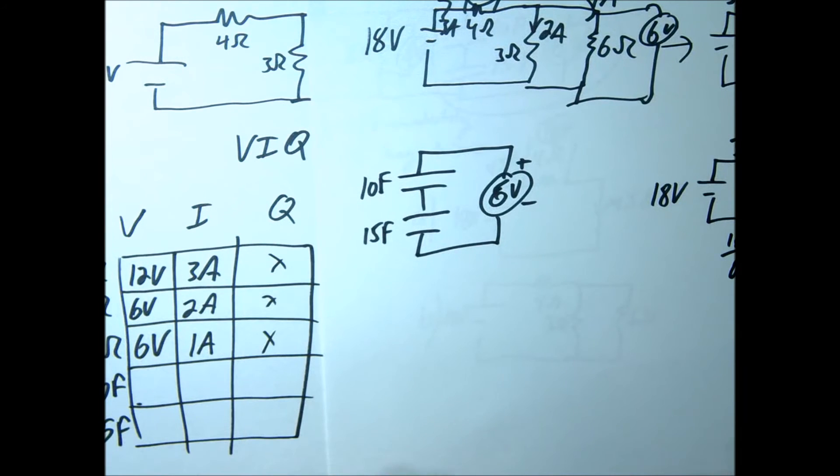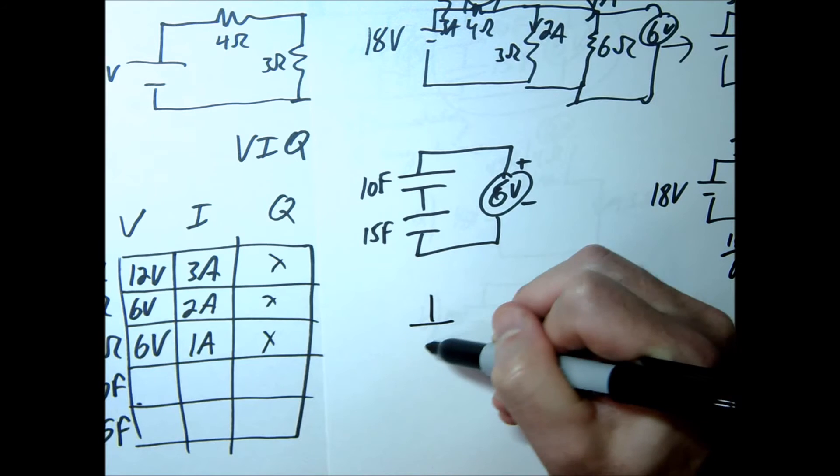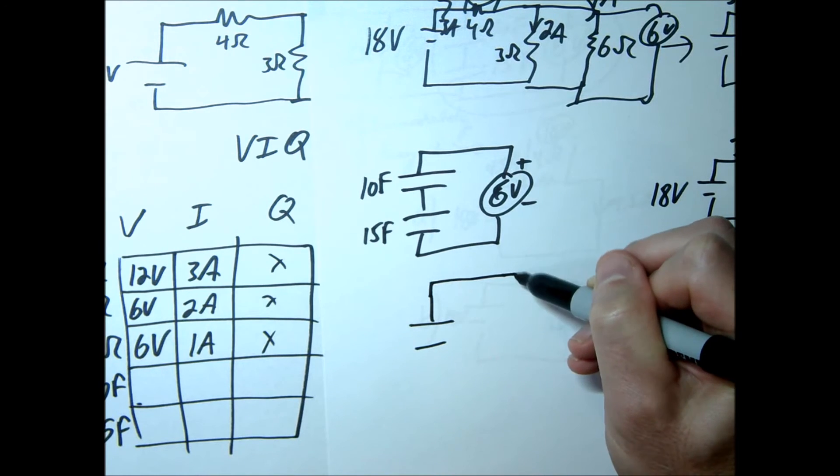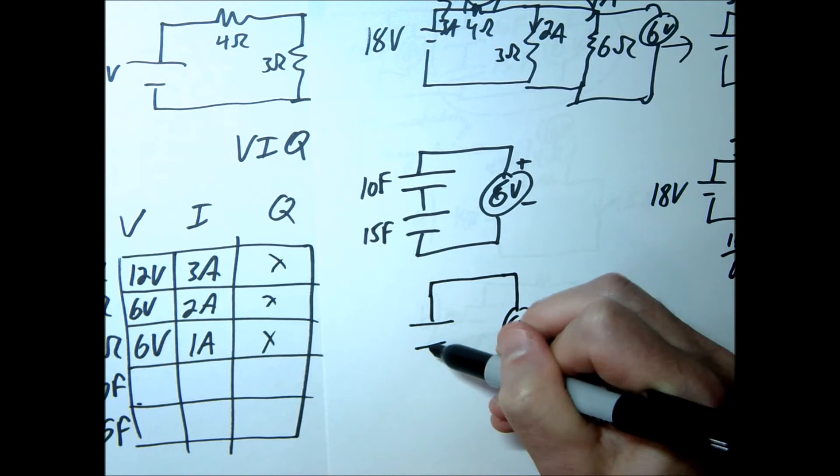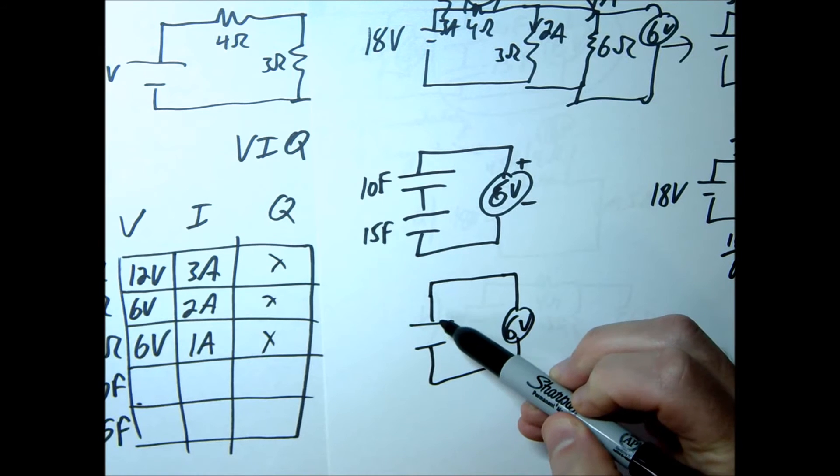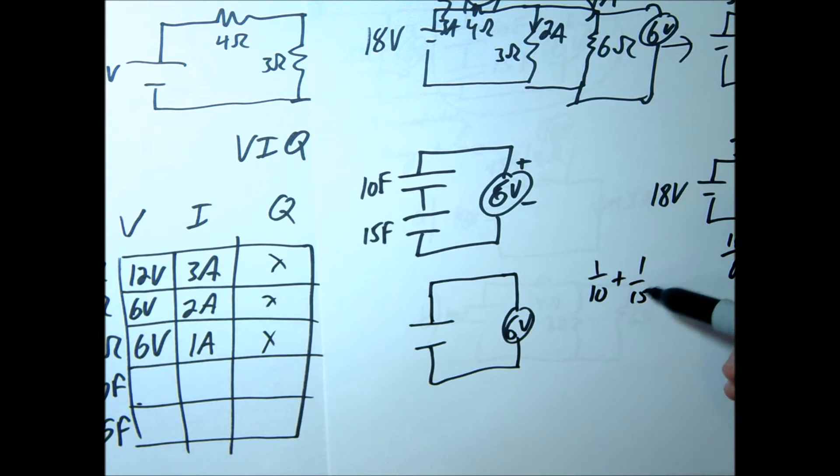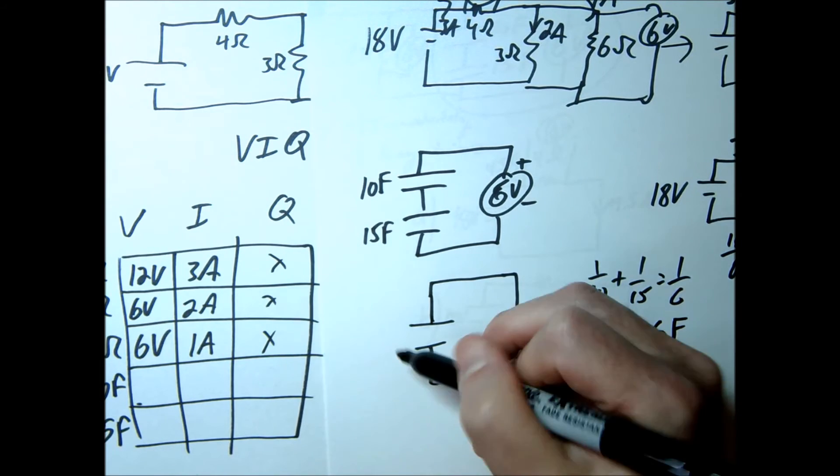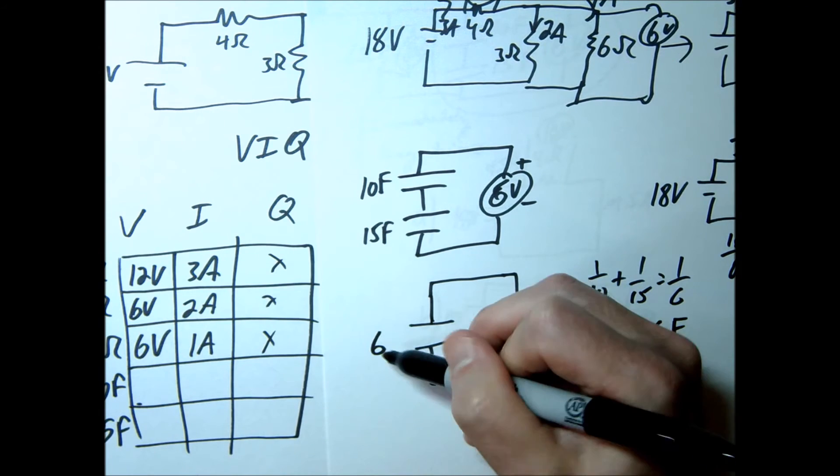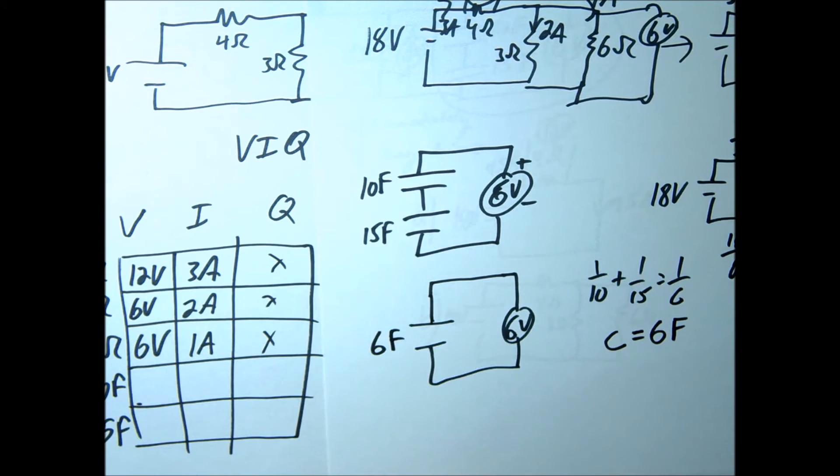Hopefully you're able to do that. I'm going to go ahead and do this. So remember when you have capacitors in series, you're going to solve for the equivalent capacitance by using 1 over—so 1 over 10 plus 1 over 15 equals 1 over C. I'll let you do the math on that. You should get a C of 6 farads. That means this is going to have a C of 6 farads here.